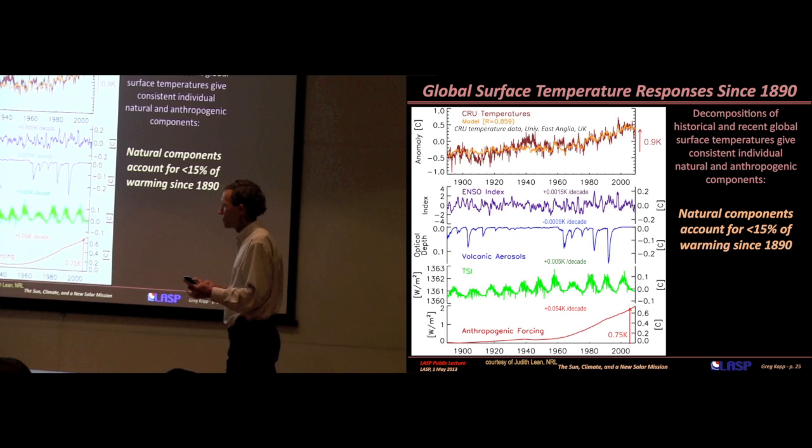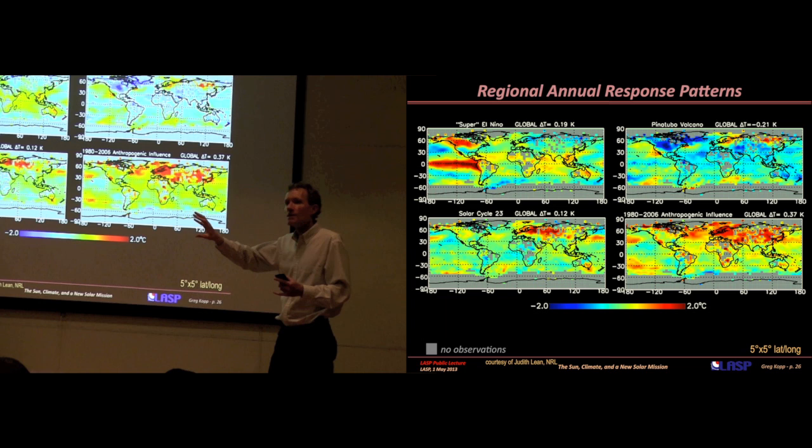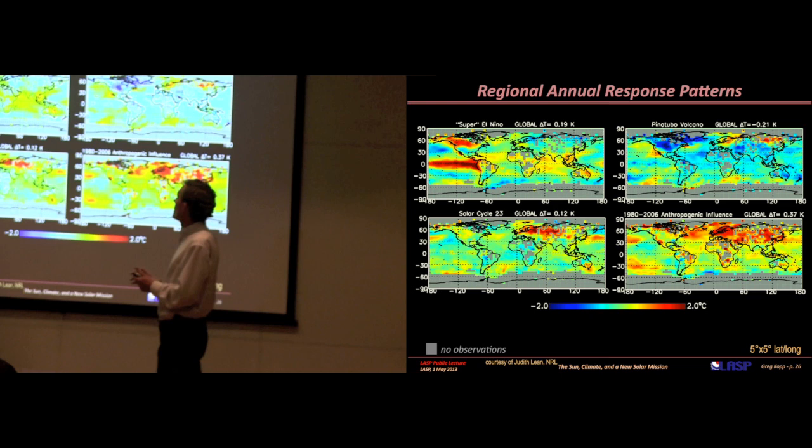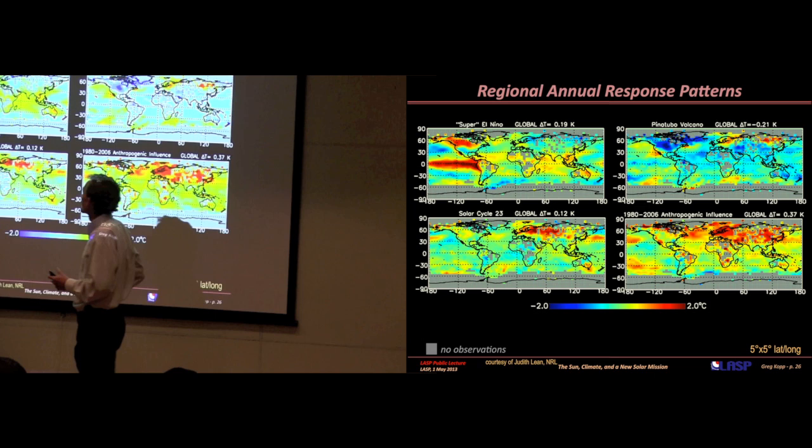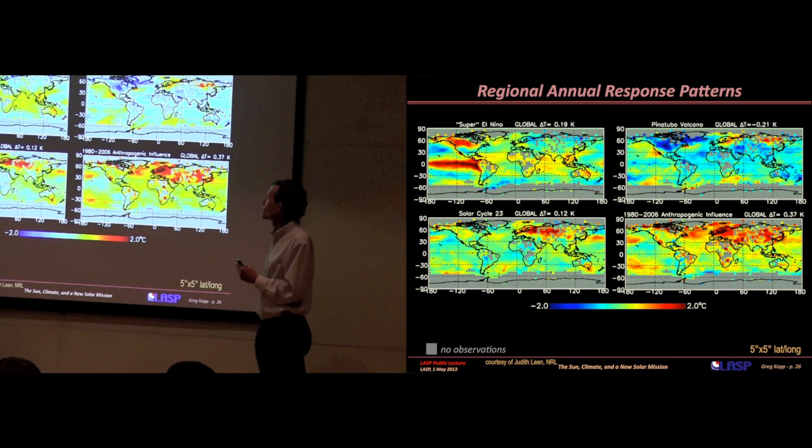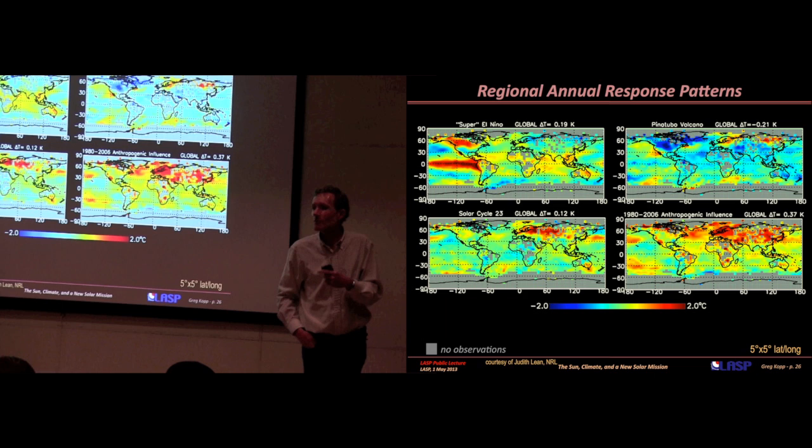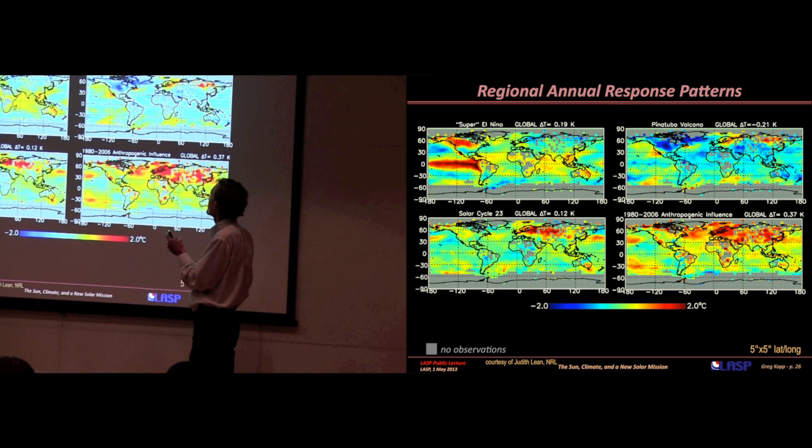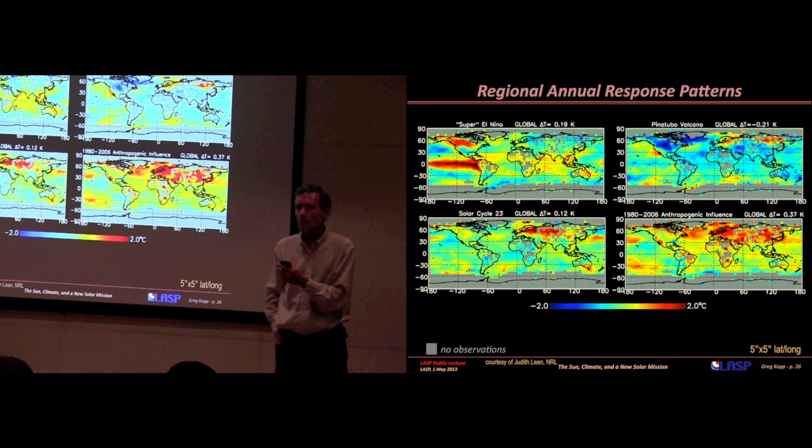I can extend that record back further in time, going over 100 years now, where anthropogenic effects weren't so large early on in the 1800s, then increased. You see spikes due to different volcanoes and the 11-year solar cycle. You can do a reasonable job of fitting the temperatures to figure out how much of temperature change is caused by all these different effects. What we learn from this is that the sun and other natural effects are probably less than 15% of the changes we've had in the last 100 years.